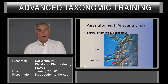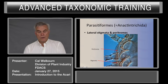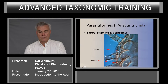Here is the lateral stigmata and paratremes in a mesostigmatic mite. Here is the stigmata, and you have the paratreme extending anteriorly along the lateral edge of the mite. This is coxal leg 2, leg 4, leg 3, leg 2, and leg 1.